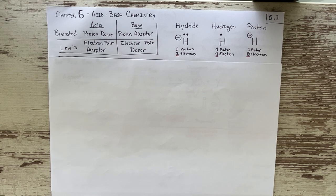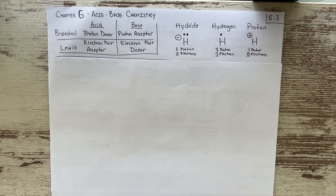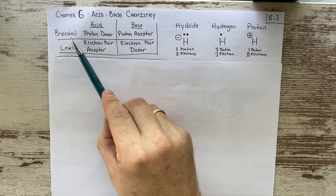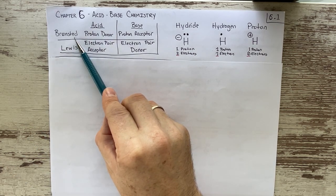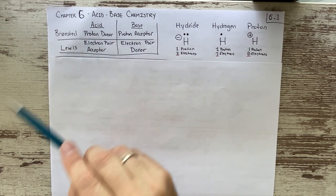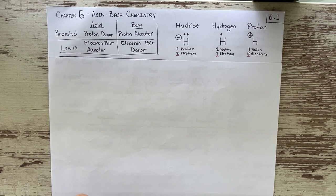Before we begin, I just wanted to define a couple of terms. If you were in lecture last week when we started acid-base chemistry, you might remember going over this. Acids and bases can be described from two different perspectives, and we refer to them as the Bronsted and Lewis definitions of acids and bases.